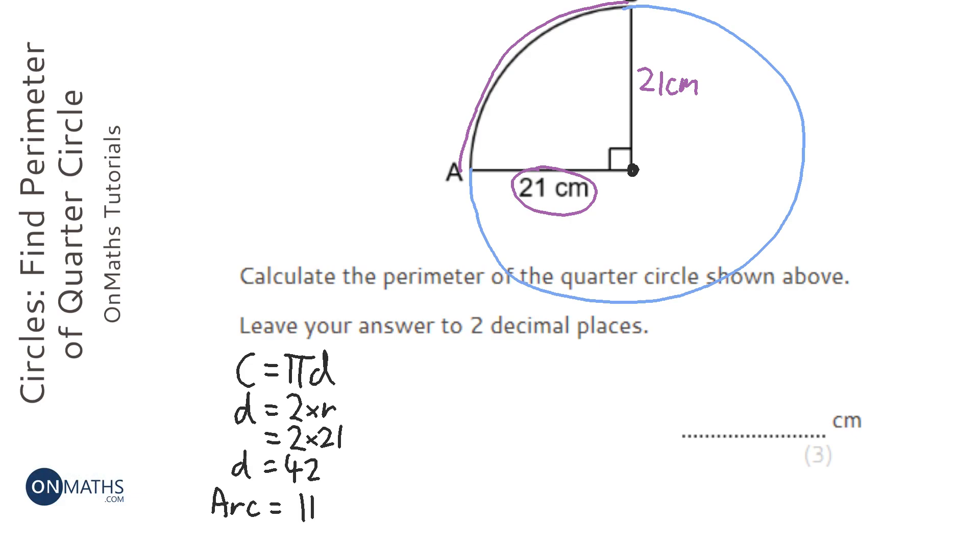So, we're going to do pi times the 42 to work out the total distance around the circle, and then we're going to times that by the fraction of the circle we have, which is a quarter.